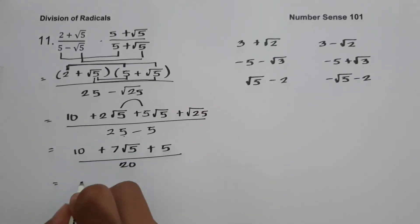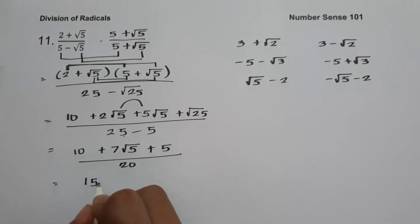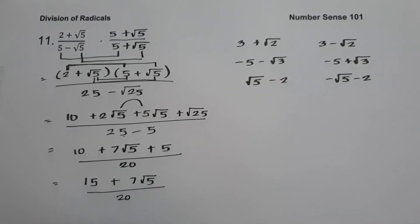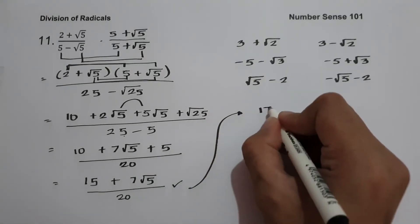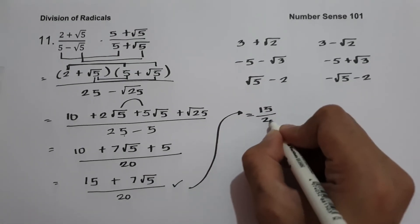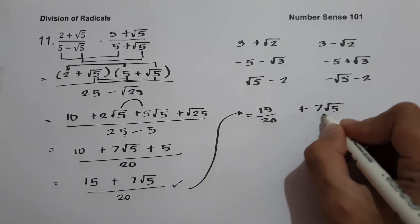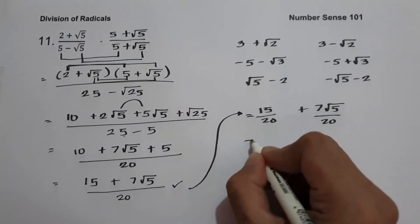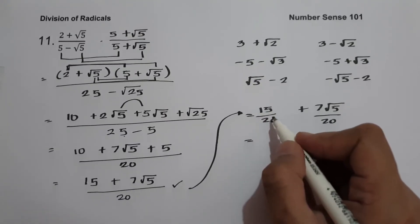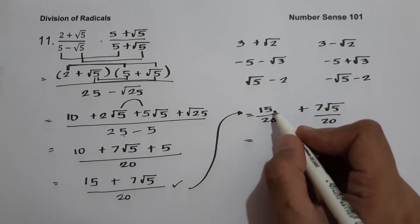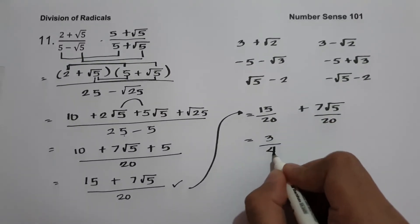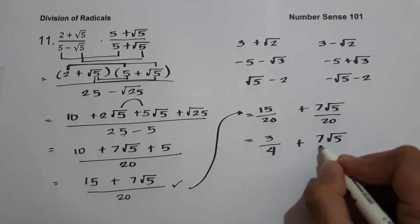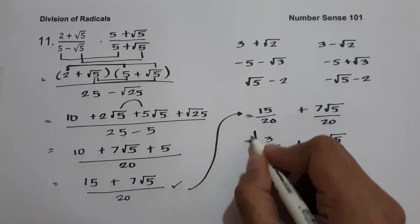Combining the numerator: 10 plus 5 is 15, and 2 square root of 5 plus 5 square root of 5 is 7 square root of 5. So we have 15 plus 7 square root of 5 all over 20. We can split this as 15 over 20 plus 7 square root of 5 over 20. Since the GCF of 15 and 20 is 5, this simplifies to 3 over 4 plus 7 square root of 5 over 20. This will be our answer.